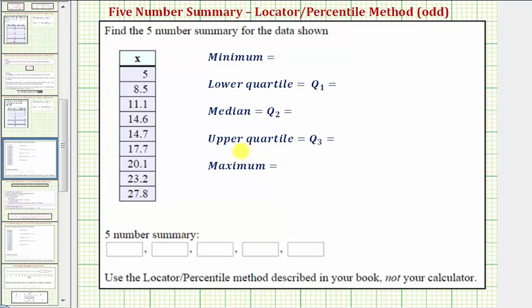These five values divide the set of data into four groups with about 25 percent or one-fourth of the data values in each group. These values are also used to create a box plot, also called a box and whisker plot.